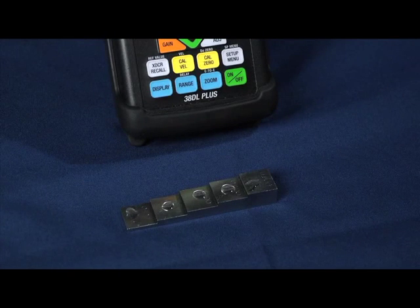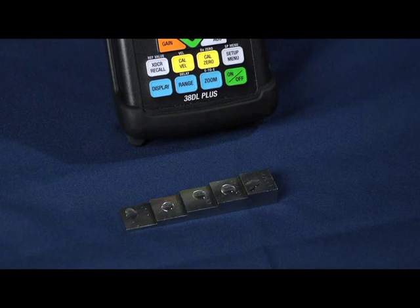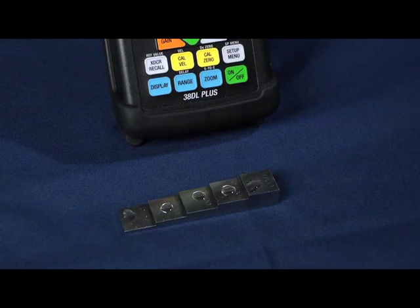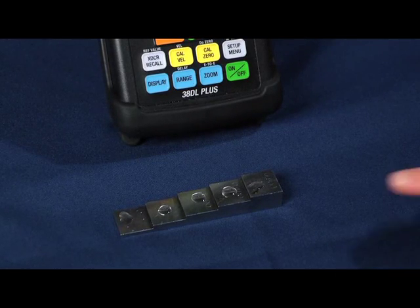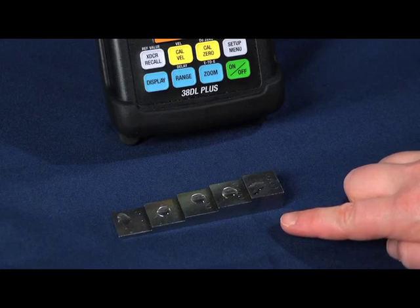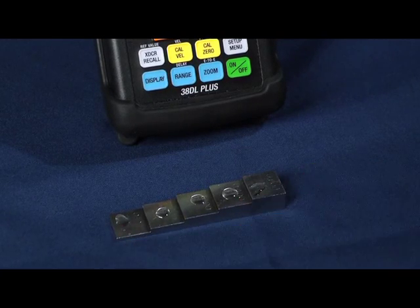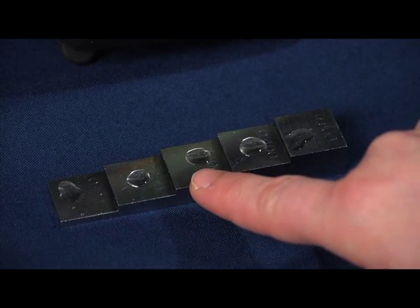At this point, we are ready to perform a two-point calibration. In this example, we are going to be calibrating to a five-step carbon steel test block, where the maximum thickness is five hundred thousandths and the minimum thickness is a hundred thousandths, with a hundred thousandths steps in between.